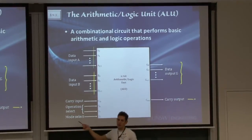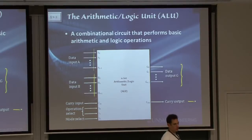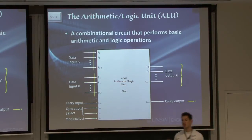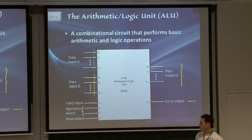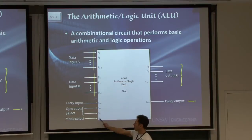There's a few control signals that we can apply to this arithmetic logic unit. First of all, there's the mode select. This will select whether we're doing an arithmetic operation or a logic operation. Arithmetic is a sort of mathematical operation, plus minus. Logic is a logical operation, such as and, or, not, xor.